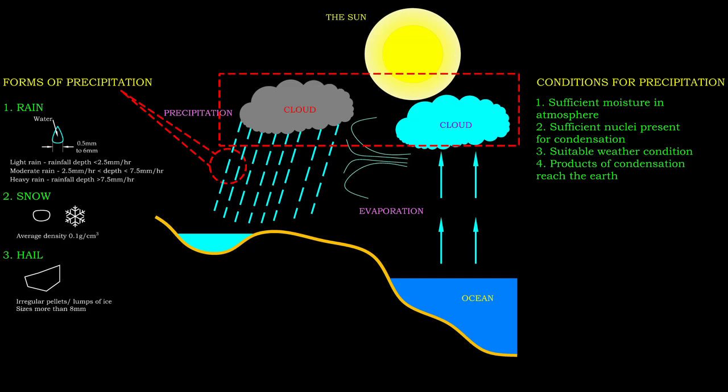For precipitation to take place, the atmosphere must be moist enough. Condensation needs to be carried out smoothly by having good weather conditions and sufficient nuclei. Finally, the product of condensation needs to reach earth before it can be called precipitation.